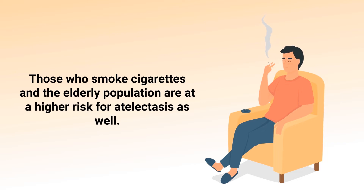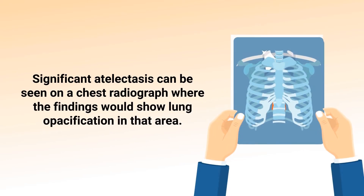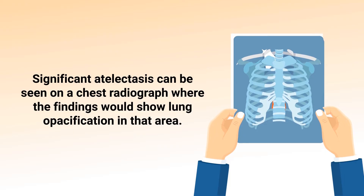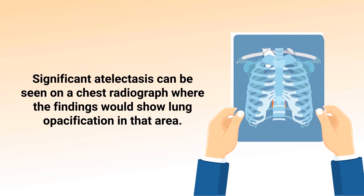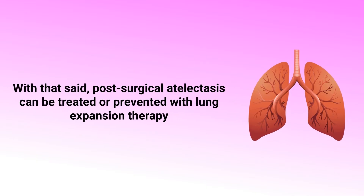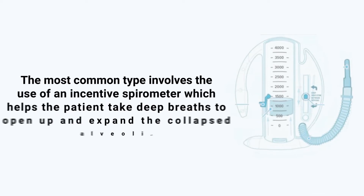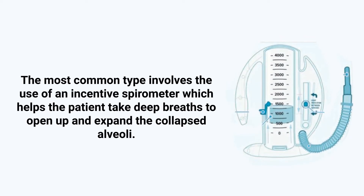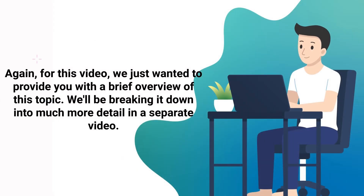Significant atelectasis can be seen on a chest radiograph, where findings would show lung opacification in that area. Atelectasis can be treated by correcting the underlying cause. Post-surgical atelectasis can be treated or prevented with lung expansion therapy, most commonly using an incentive spirometer, which helps the patient take deep breaths to open up and expand the collapsed alveoli.